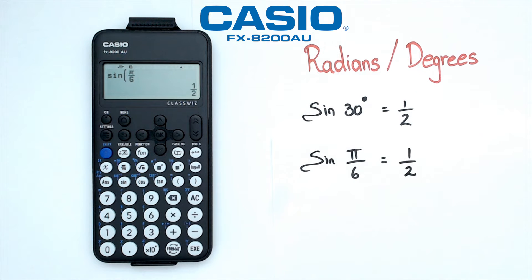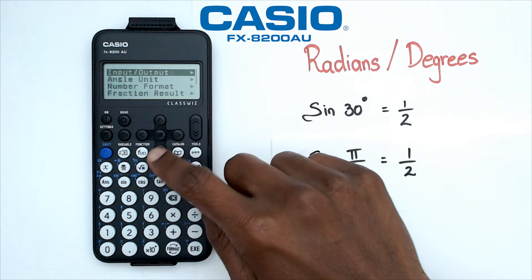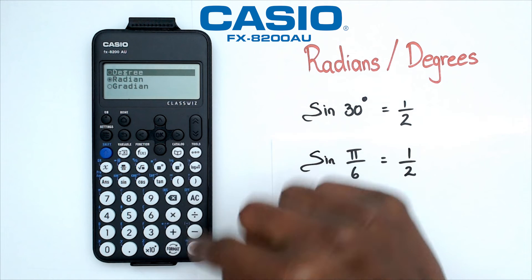Now in this particular calculator there is a way to do this without actually changing your mode from degrees to radians. So let me go back to degrees mode, so I'm going to go into angle unit and put this back to degrees.